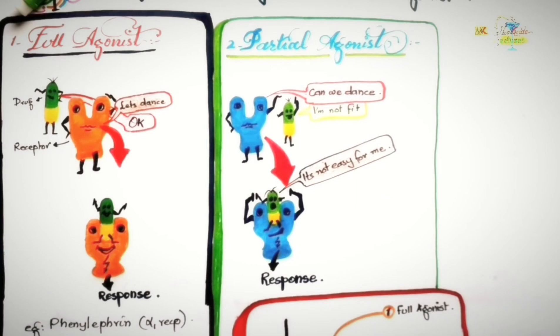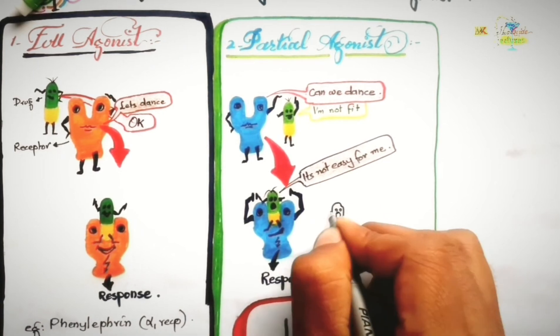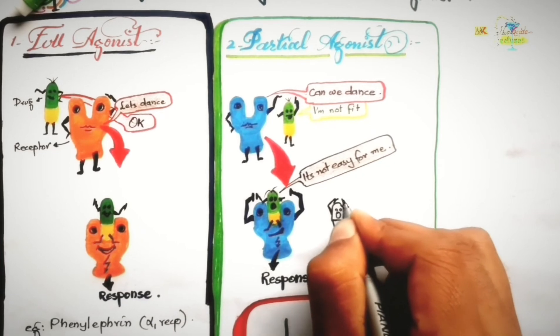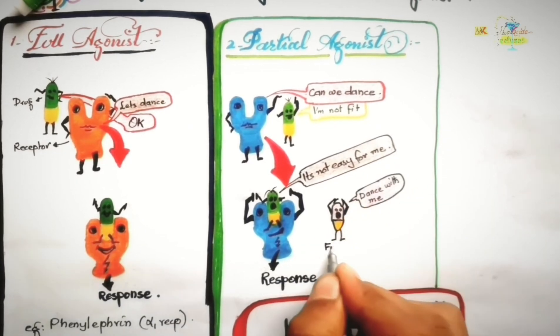Partial agonists are agonists and antagonists at the same time depending upon the presence of another agonist. For example, in the presence of another agonist, this would be an antagonist. In the absence of that agonist, it would be a partial agonist at the receptor.